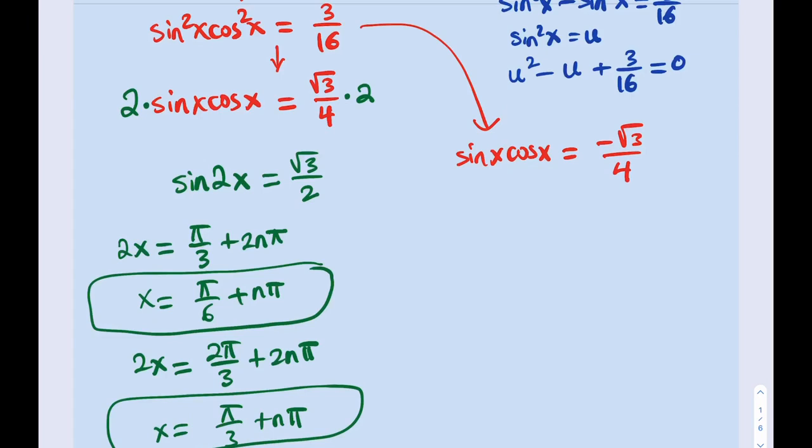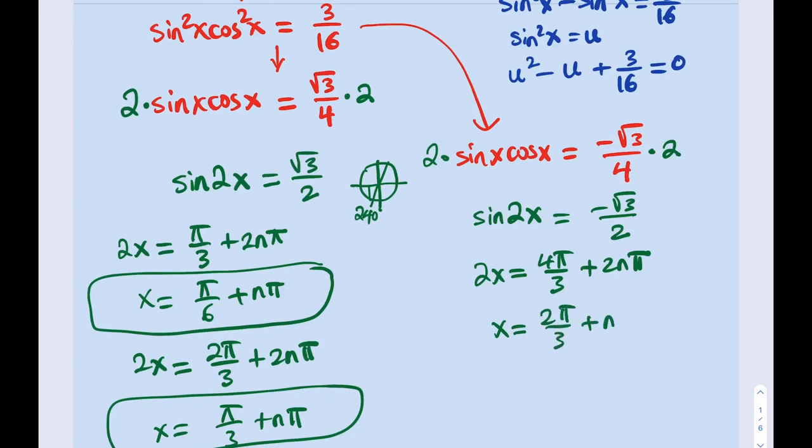What about this one? I'm going to multiply both sides by 2 again. This gives me sin(2x) again, but this time I'll be getting a negative result, which is okay. This means we are supposed to be in the third quadrant. If you think about it, this is like 60 degrees. If you extend it, that's going to put you here. What is that going to be? That's going to be 240 degrees. How do you write that in radians? 240 degrees is 4π/3, plus 2nπ. If you divide both sides by 2, you're going to be getting 2π/3 + nπ. That's another solution. And we have one more.